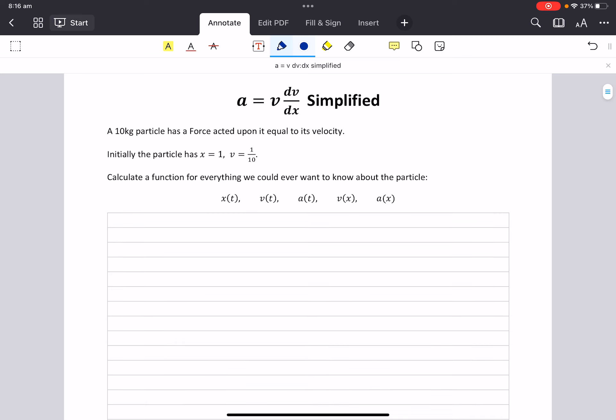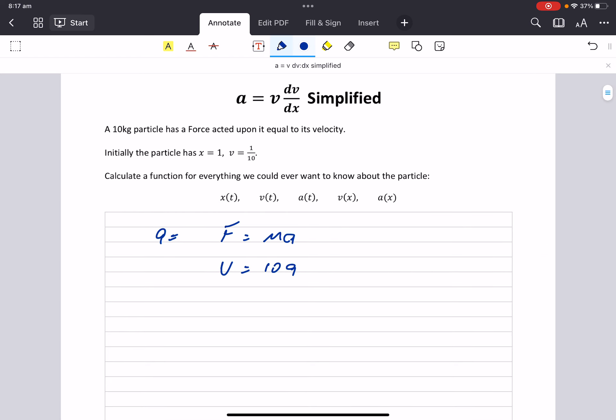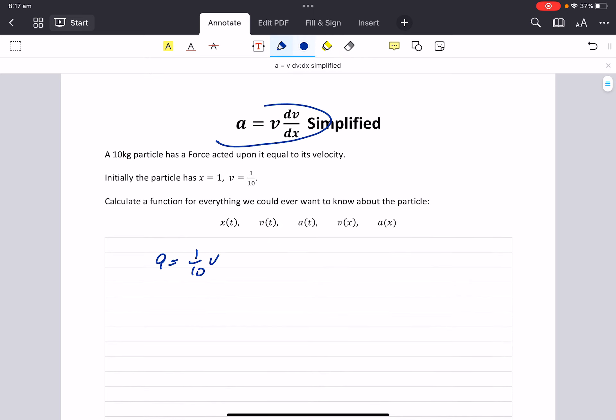Let's start with the question. F equals ma. Our force is equal to its velocity and its mass is 10. So we're going to start with a equals one tenth v, which is where the math starts. And we know a is v dv dx. So v dv dx equals one tenth v.